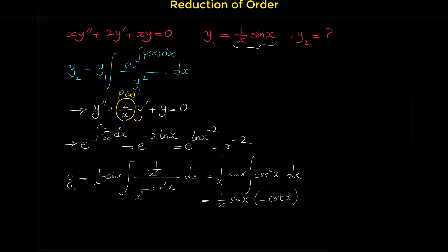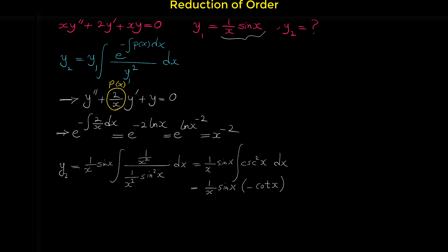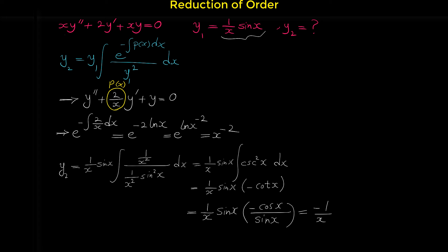We can write this as (1/(x·sin(x))) × (−cot(x)) = (1/(x·sin(x))) × (−cos(x)/sin(x)). Cancelling one sin(x) from numerator and denominator gives: y2 = −cos(x)/x. This is the second solution for the given differential equation.